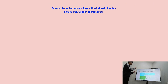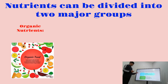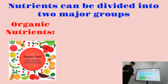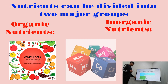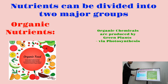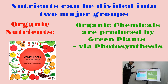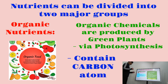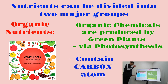Nutrients can be divided into two major groups: organic substances and inorganic substances. Organic chemicals are produced by green plants through photosynthesis, and animals can modify these chemicals, break them down, and use the energy from them. All organic substances contain carbon atoms.